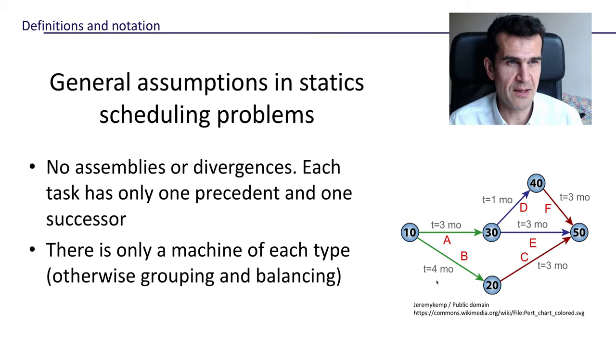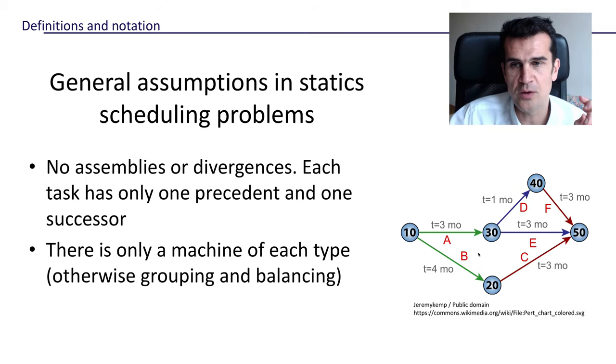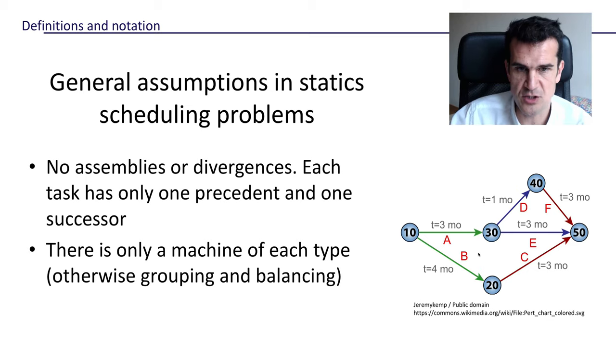And finally, there is no assemblies or divergences in the order of the tasks for each job. Each task has only one predecessor and one successor, so we will not see networks like this one. There is only a predefined order for the task to be completed for each job.